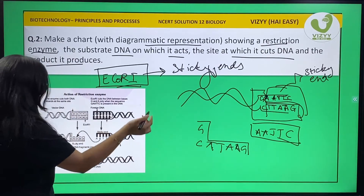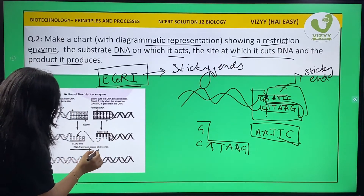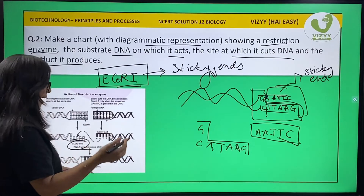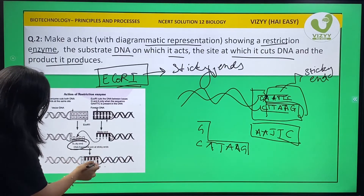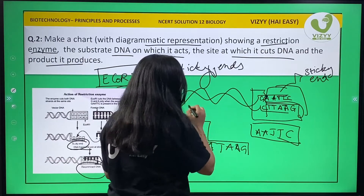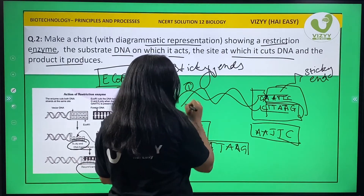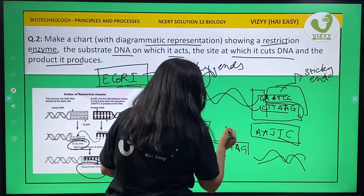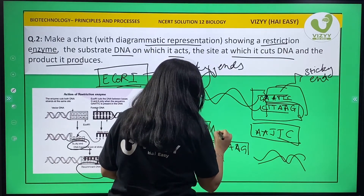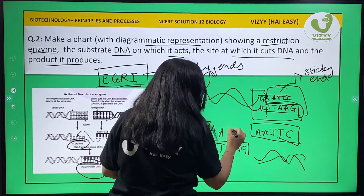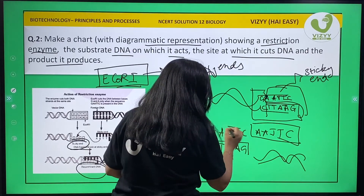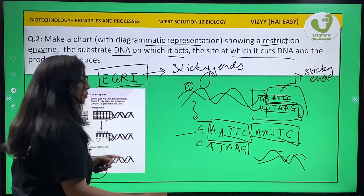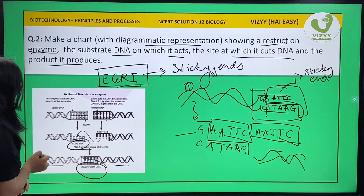The other sticky end will develop and start forming new recombination. This is fragment one and the other is fragment two. They will form a complementary strand — AATTC — and the two DNA strands will be joined together like this.